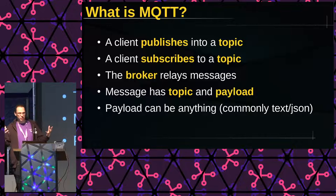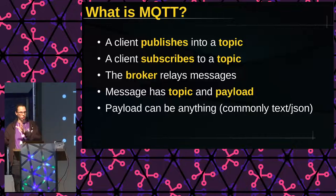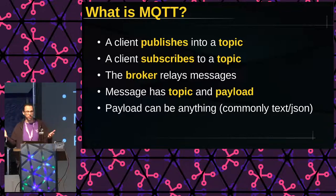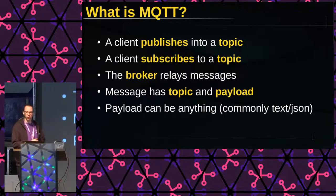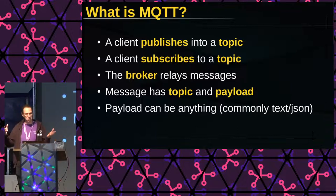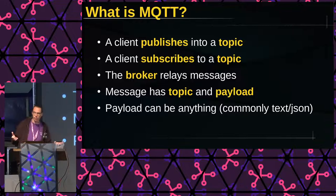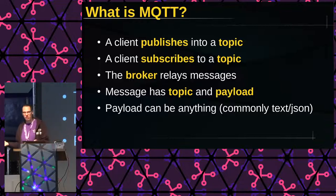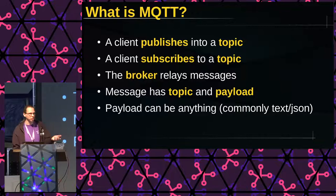So what happens? There is a client, and this client can publish into a topic. Another client, or the same client, can subscribe to a topic or several. The broker, which is the central server, will relay messages between clients. Every message in this system has at least a topic and a payload. This payload can be anything — it could be a binary file, text, and most commonly used is text, JSON, or just a number.